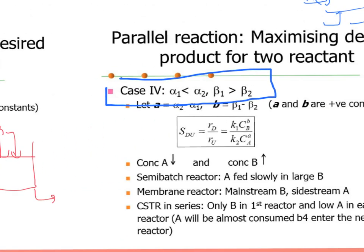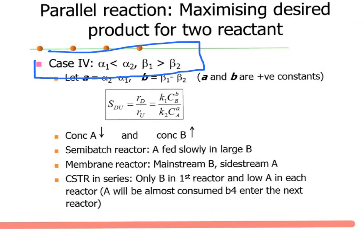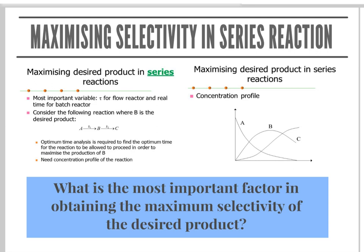For Case 4, alpha1 < alpha2 and beta1 > beta2, so you must operate at low concentration of A and high concentration of B. Suitable reactor options include a semi-batch reactor, a membrane reactor with B as the mainstream and A as the side stream, or CSTR in series. That covers maximizing selectivity in parallel reactions for two reactants.